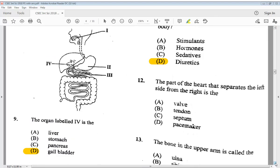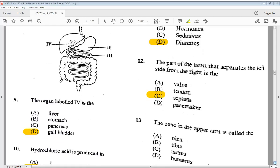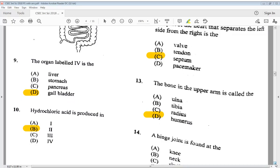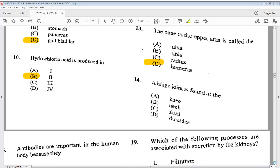12 says, the part of the heart that separates the left side from the right is the A valve, B tendon, C septum, D pacemaker. We know that is C septum. 13 says, the bone in the upper arm is called the A ulna, B tibia, C radius, D humerus. We know it is D humerus. Let's go to number 14. A hinge joint is found at the A knee, B neck, C skull, D shoulder. That is A knee.